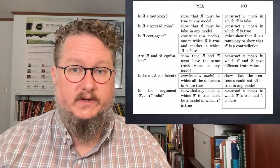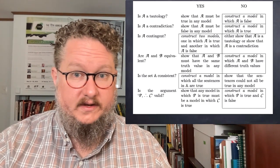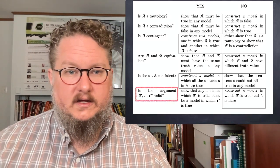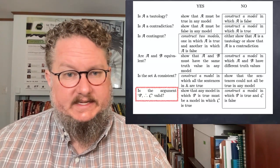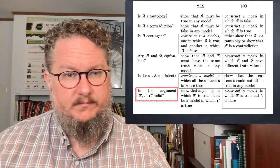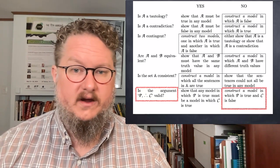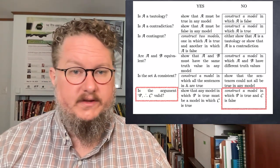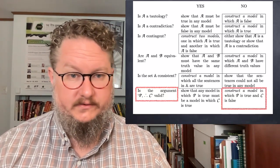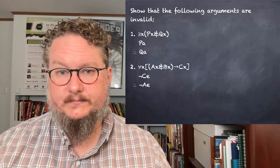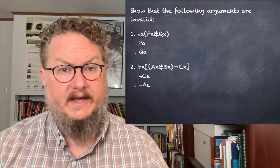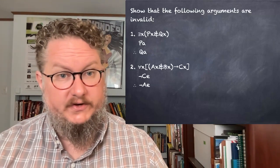That's how we show a sentence is contingent. To show it's not contingent, we would show either that it's a tautology or a contradiction, which requires reasoning with all possible models. Let's look at the question of whether an argument is valid. To show that an argument is invalid, we have to construct a model in which the premises are true and the conclusion is false.